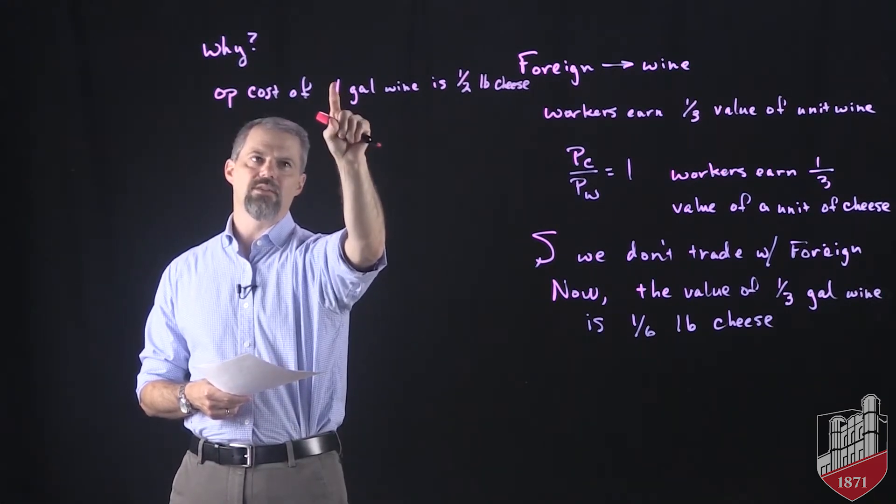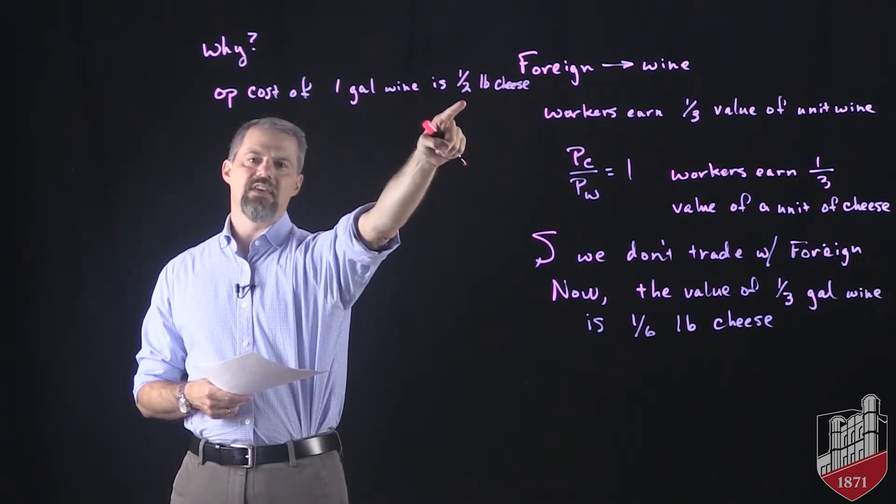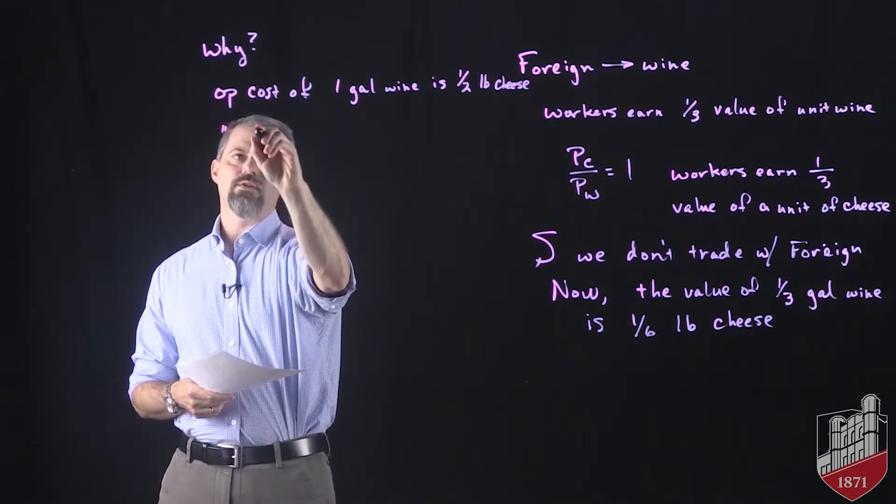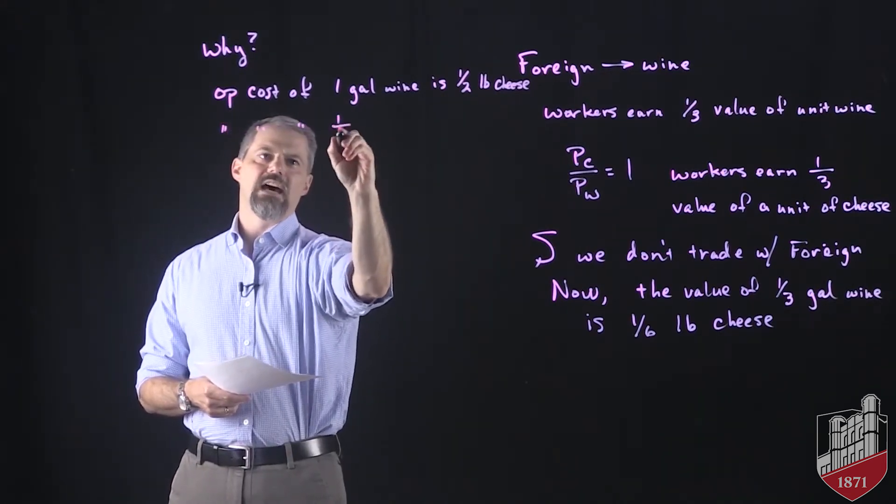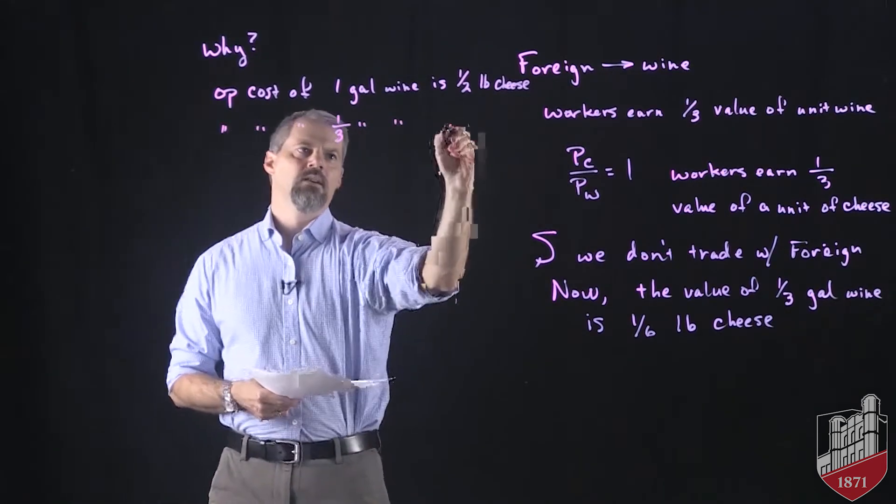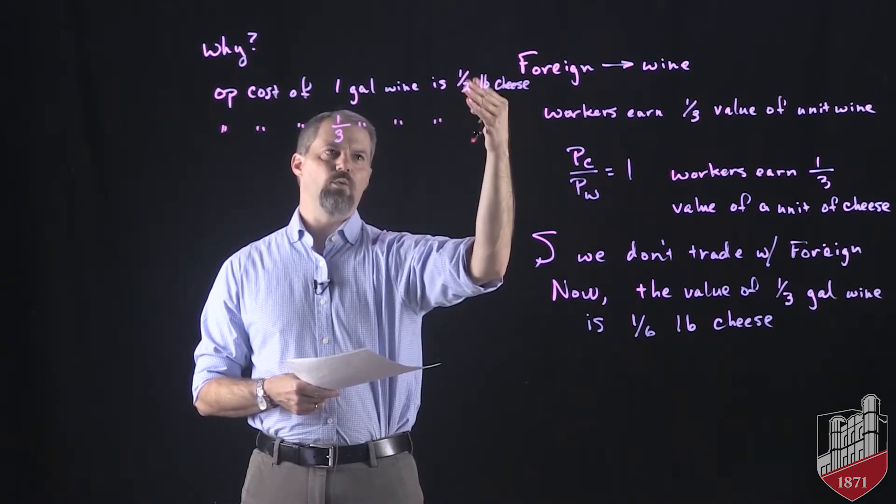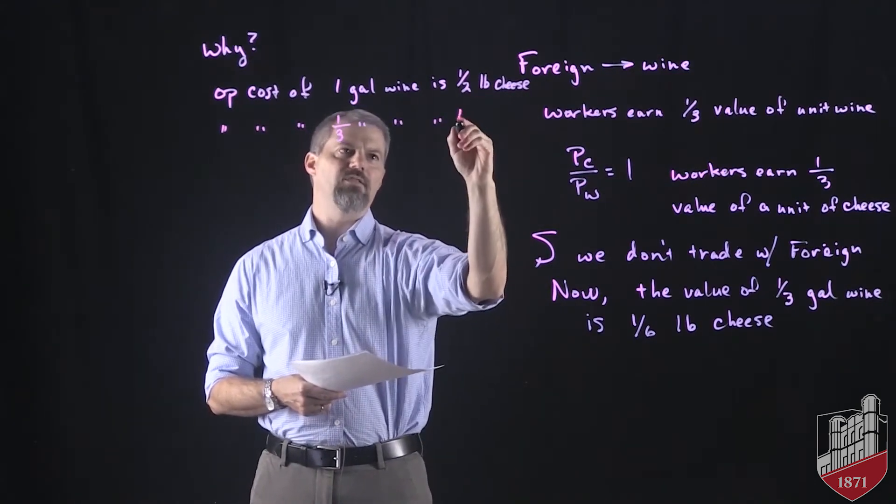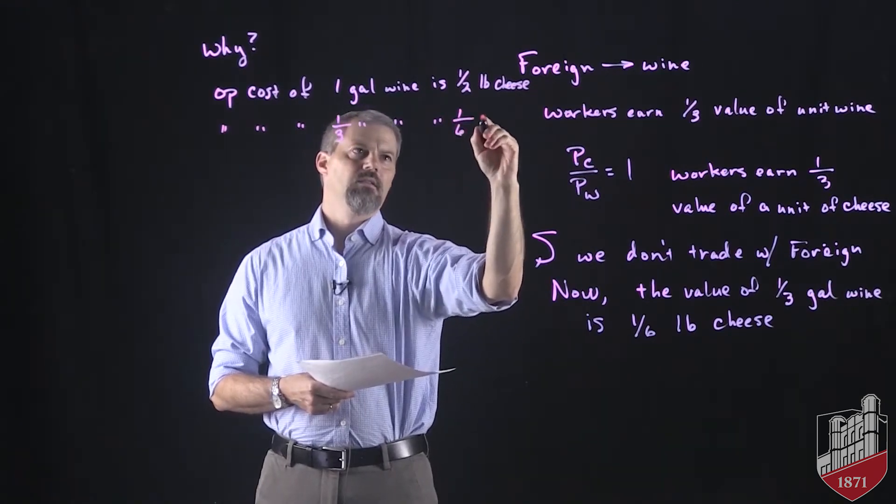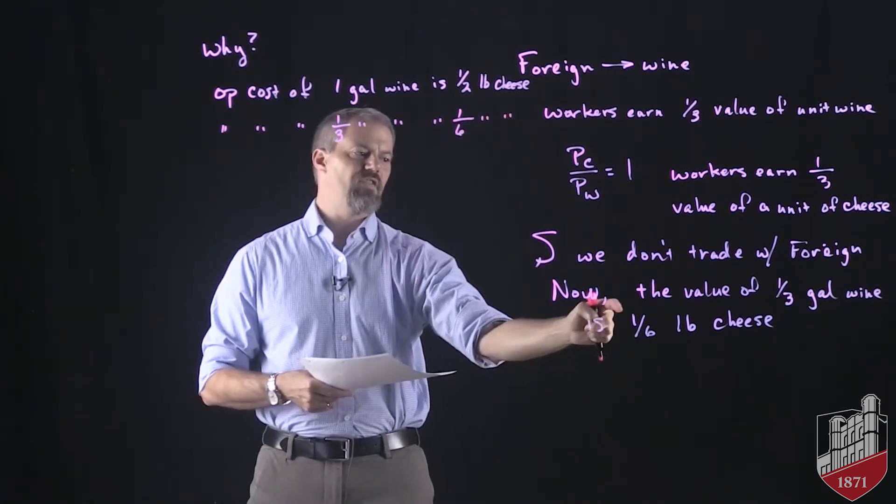I also have to divide that number by three. So that tells me that the opportunity cost of a third gallon of wine is one-half divided by three is the same as one-half multiplied by one-third. That's one-sixth of a pound of cheese. So that's where that comes from.